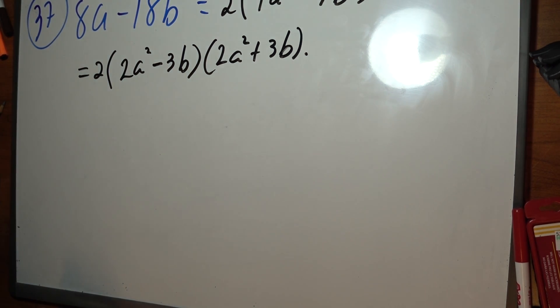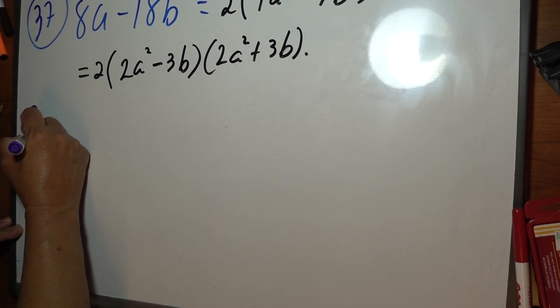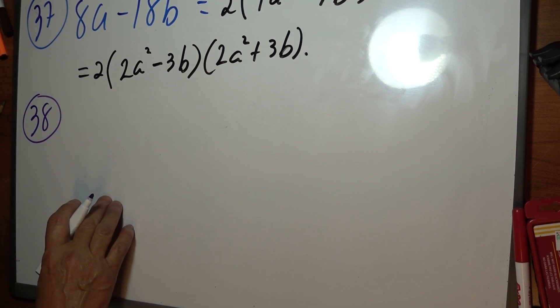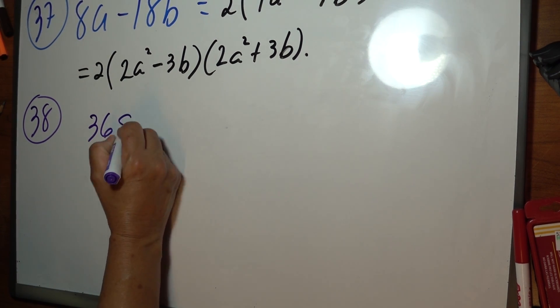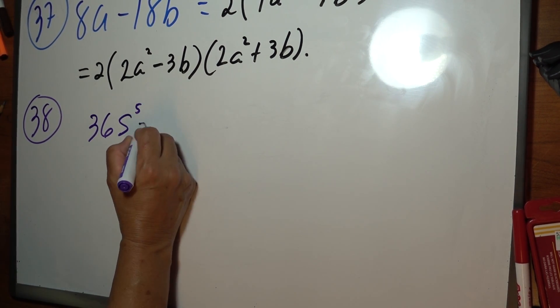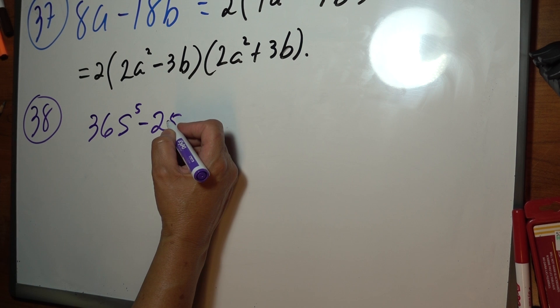Problem number 38 is 36s to the 5th power minus 25t to the 4th.